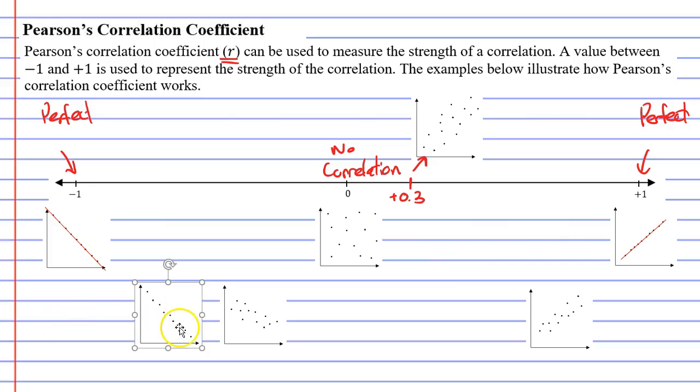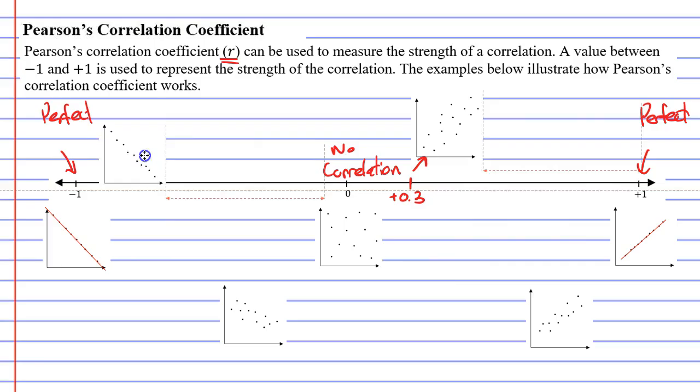The next scatter plot I have here is negative, but it's very, very strong. The points almost all land on a line. They're not perfect like the one I have here, but they're very close to perfect. So I'm going to give this a very strong score. Let's give it a score of negative 0.9, negative because it's going downhill.